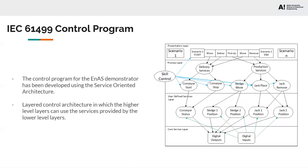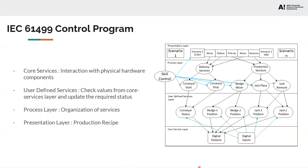Coming to the first part, the IEC 61499 control program. The control program for the full scenario was developed based on the service-oriented architecture. Service-oriented control architecture is a layered architecture in which higher-level layers can use the services provided by the lower-level layers, thereby improving flexibility and modularity. The core services layer, the bottom-most layer, is the layer that directly communicates with the hardware components such as sensors and actuators.